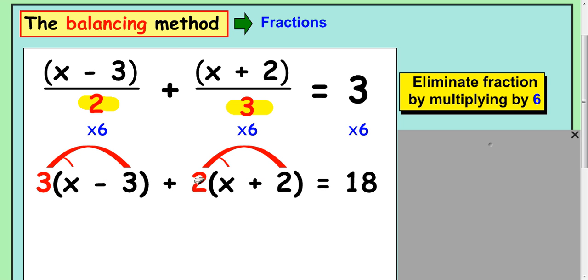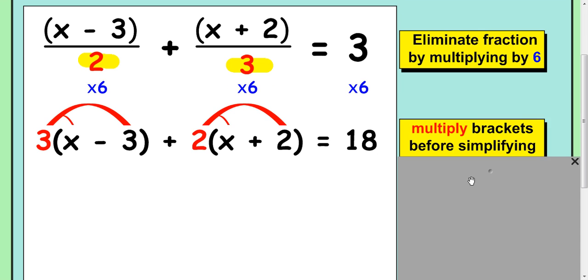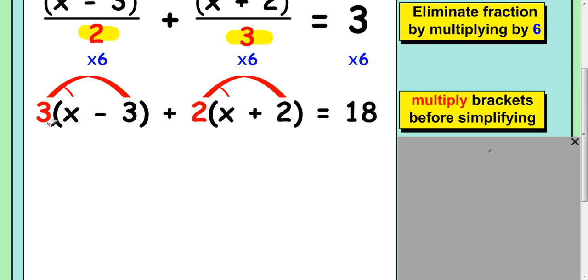So once I've got that, once I've got rid of these denominators, it's just a case of multiplying out the brackets and simplifying this side. So multiply this bracket by 3, so 3x take away 9, plus 2x, 2 times x, and then 2 times 2 which is 4. And that comes to 18.